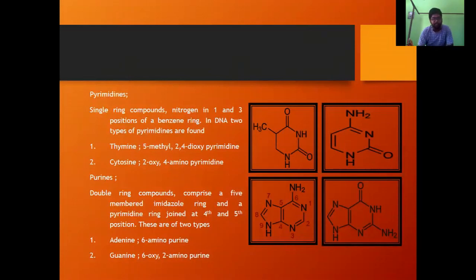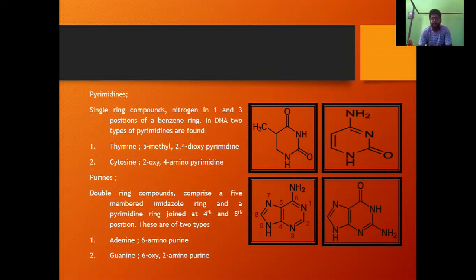Regarding purines and pyrimidines: pyrimidines are single-ring compounds with nitrogen at positions one and three of the ring. In DNA, two types of pyrimidines are found — thymine and cytosine. Thymine is 5-methyl-2,4-dioxypyrimidine, and cytosine is 2-oxy-4-aminopyrimidine.